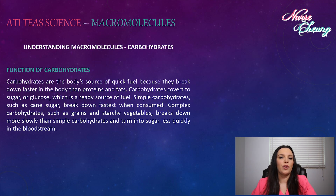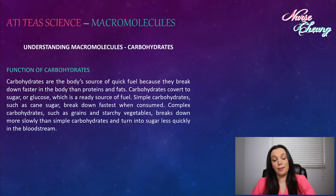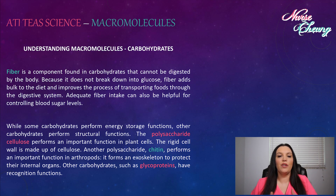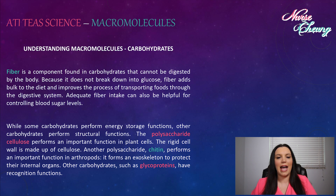Carbohydrates are the body's source of quick fuel because they break down faster in the body than proteins and fats. Carbohydrates convert to sugar or glucose, which is a ready source of fuel. Simple carbohydrates, such as cane sugar, break down fastest when consumed. Complex carbohydrates, such as grains and starchy vegetables, break down more slowly and turn into sugar less quickly in the bloodstream. Fiber is a component found in carbohydrates that cannot be digested by the body. Because it does not break down into glucose, fiber adds bulk to the diet and improves food transport through the digestive system. Adequate fiber intake is also helpful for controlling blood sugar levels.